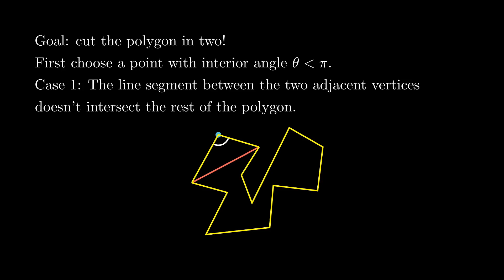Then there are two cases to consider. The easy one is when the line segment connecting the two adjacent vertices doesn't intersect the rest of the polygon. In that case, we can cut the polygon along that segment and apply the induction hypothesis to each piece.